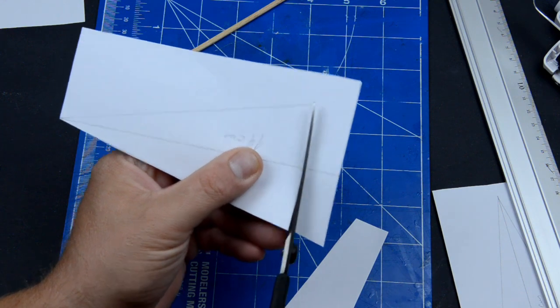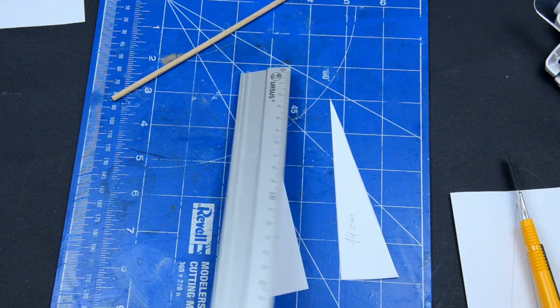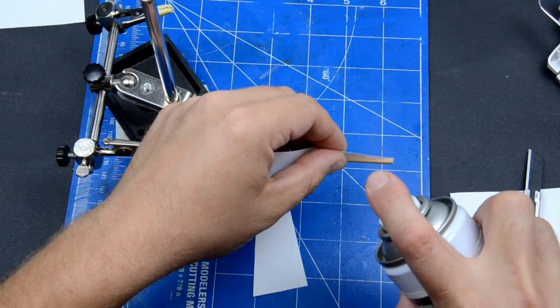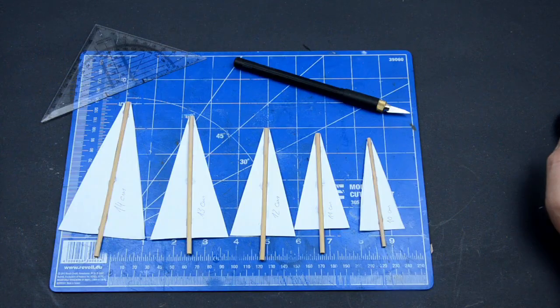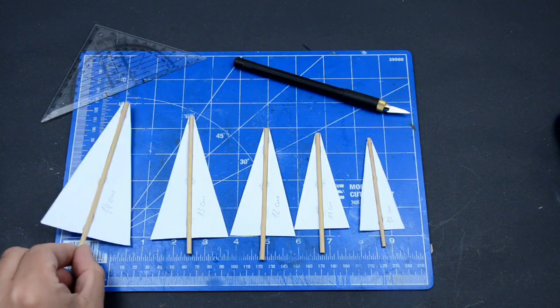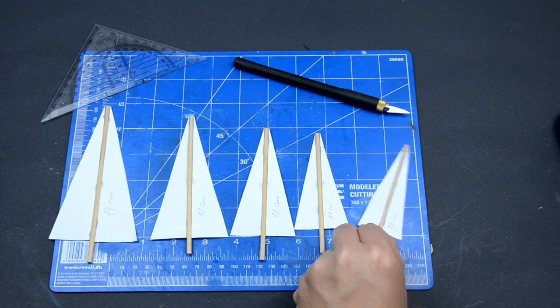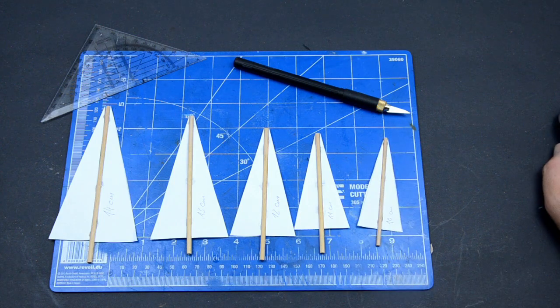I drew a simple pine tree shape and cut both halves out of paper. Then I glued the halves onto cocktail sticks using medium CA and accelerator. Because I wasn't sure about the dimensions needed, I made a few of them. I used cocktail sticks because those 2D trees will become 3D ones in the near future.